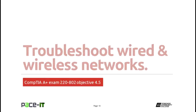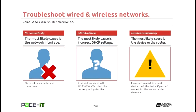We've now covered troubleshooting common video and display issues. Let's move on to troubleshooting wired and wireless networks. The most likely cause of no connectivity is the network interface — your NIC. Check to see if you have link lights on and blinking on both the PC and at the switch or router. Check your cables and make sure they're connected nice and solid. If that doesn't resolve the problem, unplug your network cable from the switch and plug it into a new port on the switch and see if you get connectivity back. If still no connectivity, it's time to look at the other end — more than likely inside your case.